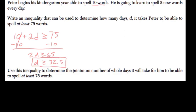Use this inequality to determine the minimum number of whole days it will... Oh, so here they say it. What's the minimum number of whole days? Well, it's everything greater than or equal to 32.5. So the first whole day that would happen is 33. Right? We round up.